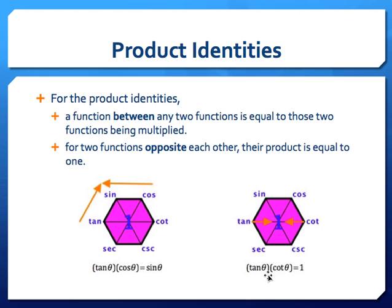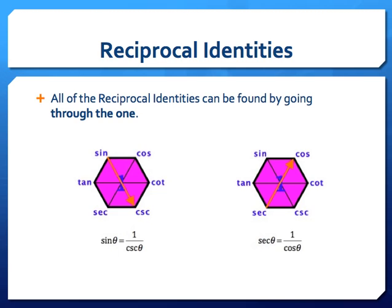Next we're going to take a look at our reciprocal identities. All of the reciprocal identities can be found by going through the one. Sine is equal to one over cosecant. I can start anywhere along this hexagon. Starting at secant, secant is going to be equal to one over cosine. So all of the reciprocal identities can be found by going through the one that's in the center of the hexagon.